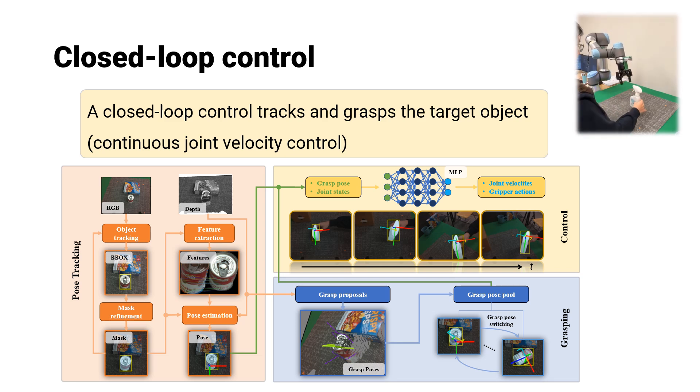We want to avoid grasping the moving object as a failure may damage the object or environment when its motion is random.